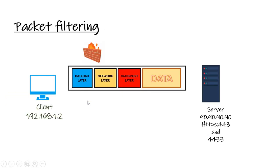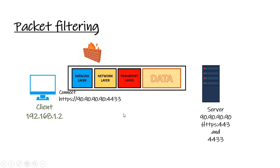Packet filtering technology was introduced in the late 80s or early 90s. The way it works: we have the firewall and we specify the rule base. The first rule allows the client to connect to the server, and we need a reverse rule to specify the connection from the server back to the client. I've placed the firewall right between the data link and network layer, just as described.